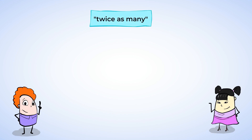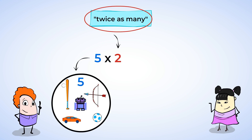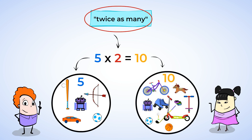Let's take a look at this last example. If Fred has five toys and we know that Sally has twice as many toys, the word twice indicates multiplying by two. So we can multiply the number of toys Fred has by two in order to find the number of toys that Sally has. Five times two is ten, and that means Sally has ten toys. We have just translated this sentence into a math expression in order to figure out how many toys Sally has.